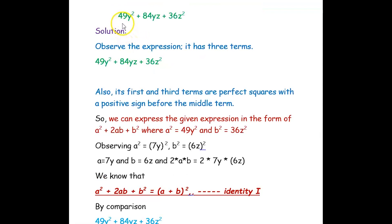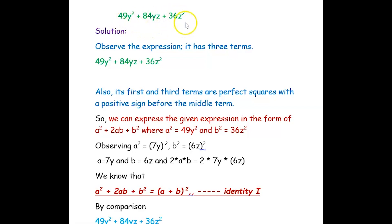Now let's see the next example. The given algebraic expression is 49y squared plus 84yz plus 36z squared. Observing the expression, it has three terms. The coefficient of the first term is 49 and the last term is 36z squared — both are perfect squares.